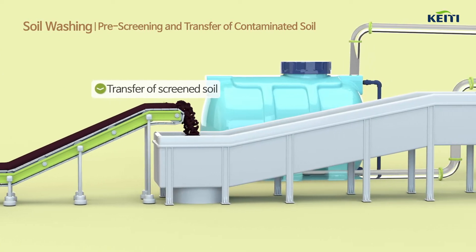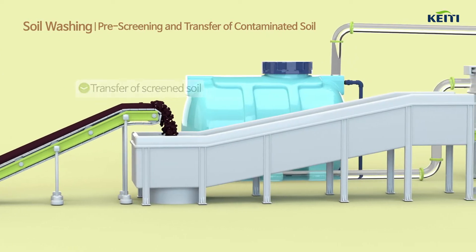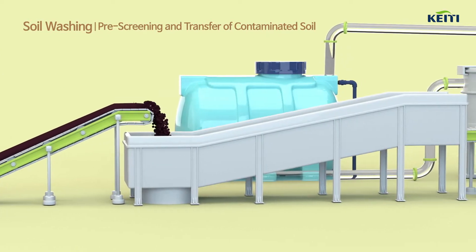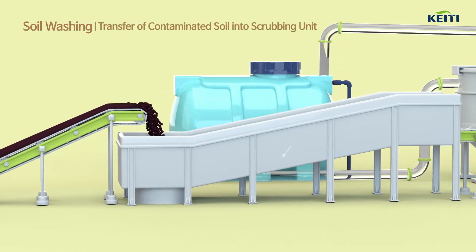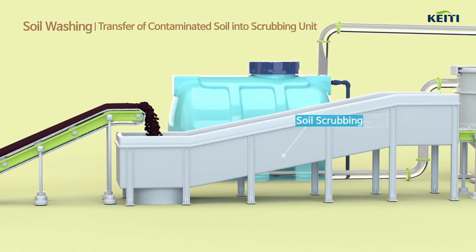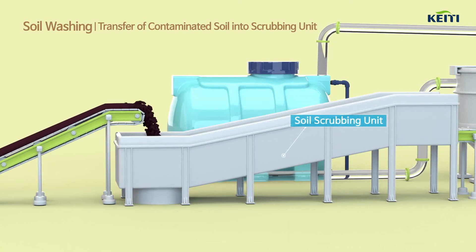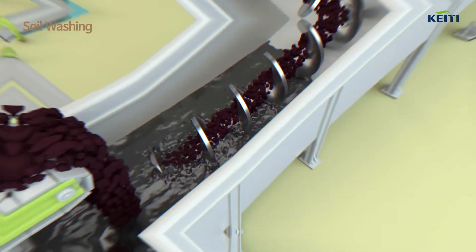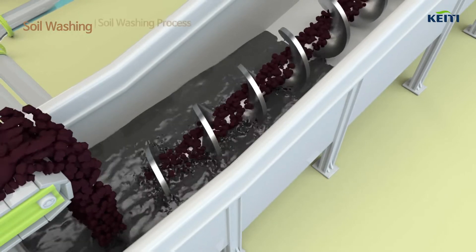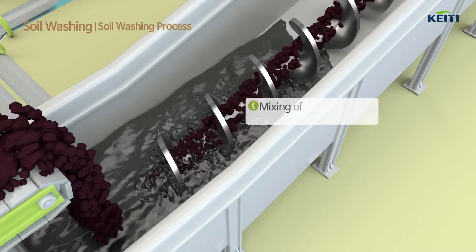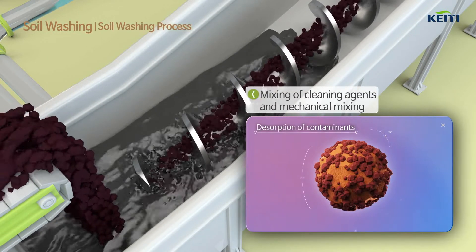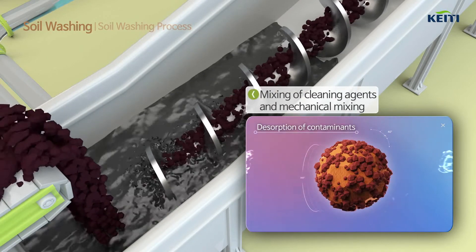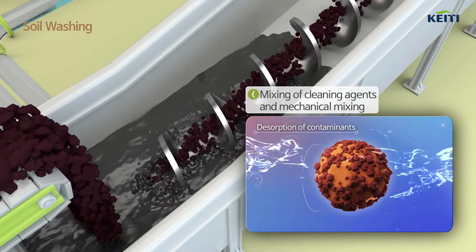The selected contaminated soil is transferred to a washing tank, where it is mechanically mixed with the washing solution to separate the contaminants from the soil.